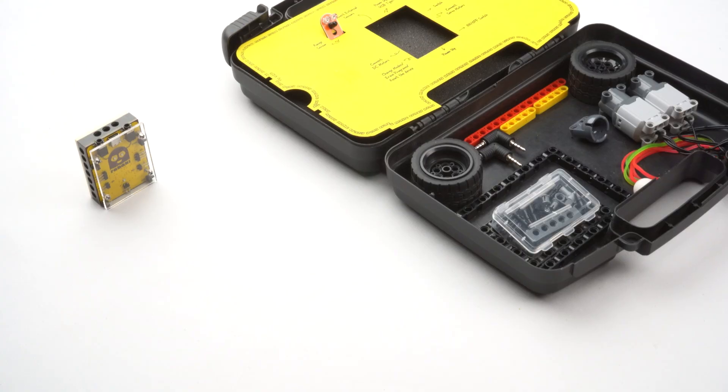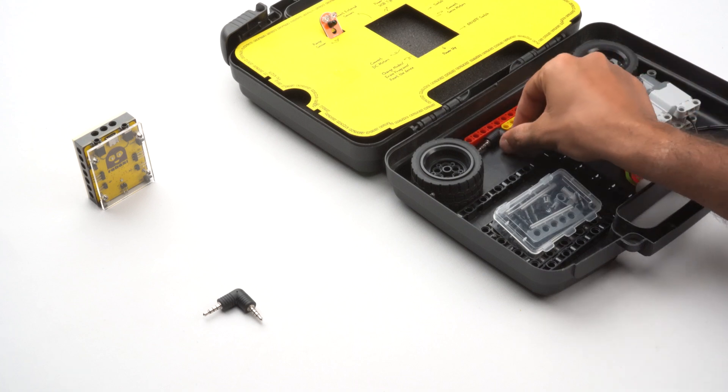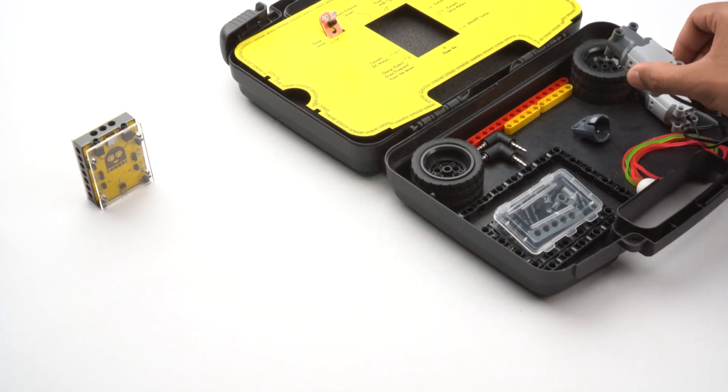But how do we connect these sensors to RoboKey? That's where these angle connectors come in. We can connect the sensors to RoboKey using these angle connectors. We also have motors in the box.